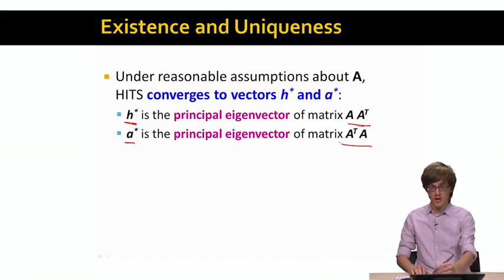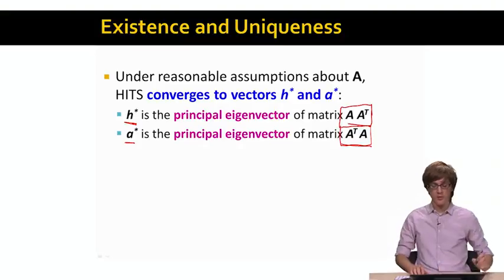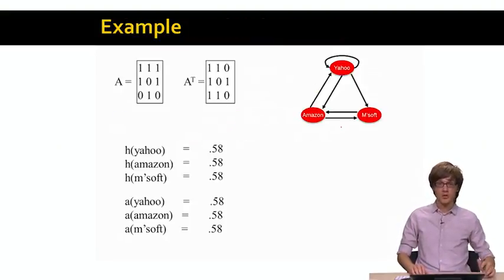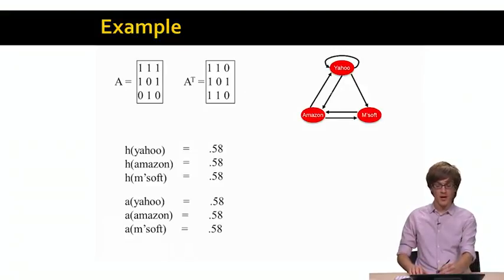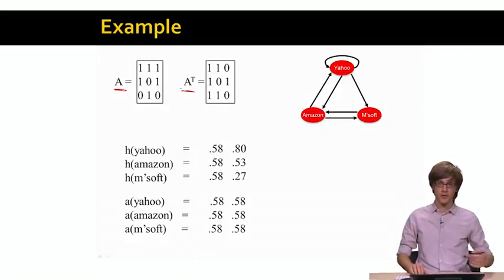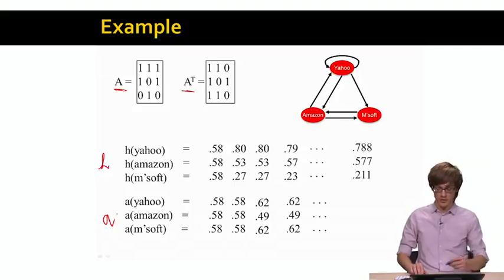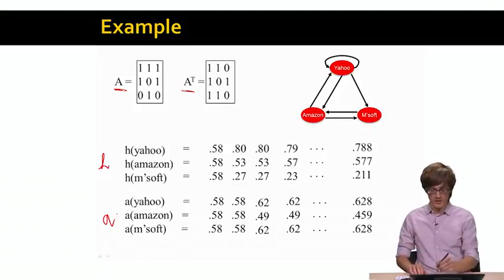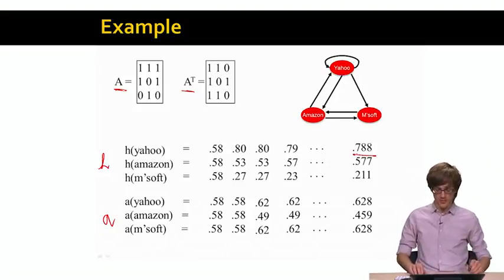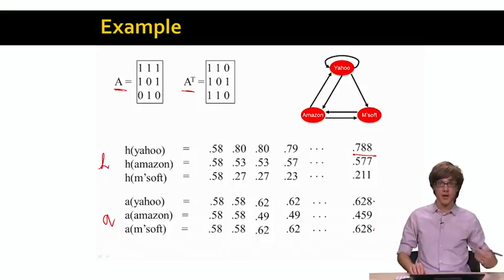To summarize the matrix structure: for the authority score, we use A-transpose times A; for the hub score, we use A times A-transpose. As a concrete example with a three-node web graph of nodes Y, A, and M, running the iteration to convergence shows that Yahoo is a very good hub, while Yahoo and Microsoft turn out to be very good authorities — illustrating how hub and authority scores give a different way to compute the importance of nodes in a graph.